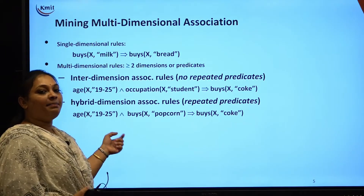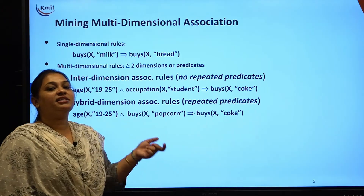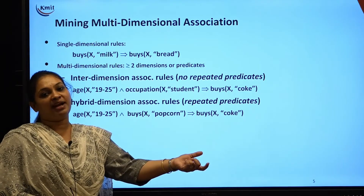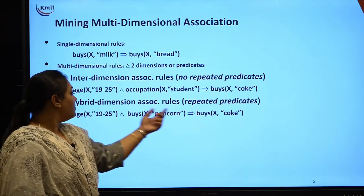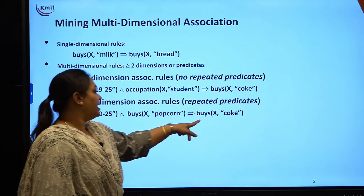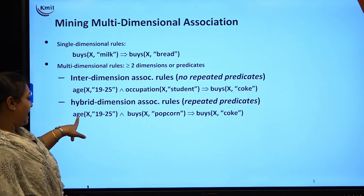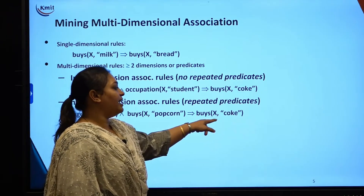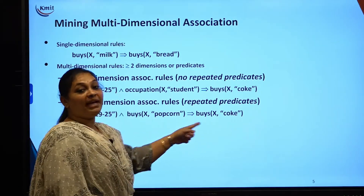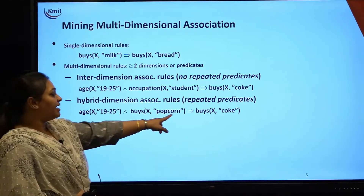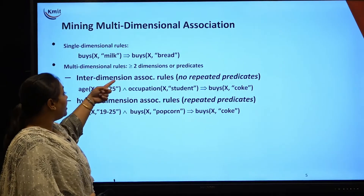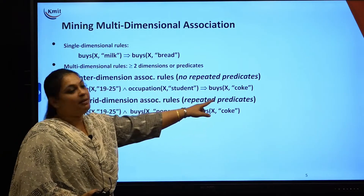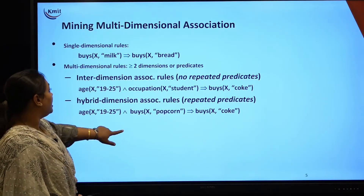When coming to hybrid dimensional, we have repetition of predicates. That is, an attribute like 'age' or 'buys' can be reused multiple times. For example: age of X is 19 to 25 and buys popcorn gives me buys coke. You can see 'buys' appears as a predicate both in the antecedent and the consequent. But in inter-dimensional, age and occupation are separate attributes giving me 'buys' — no repetition. This is multi-dimensional association.